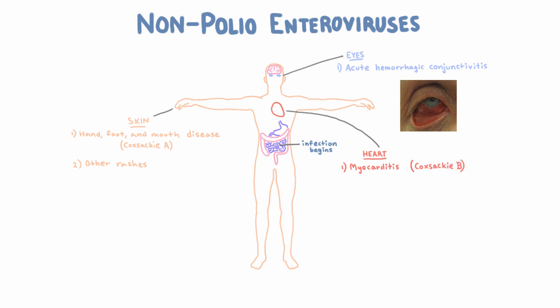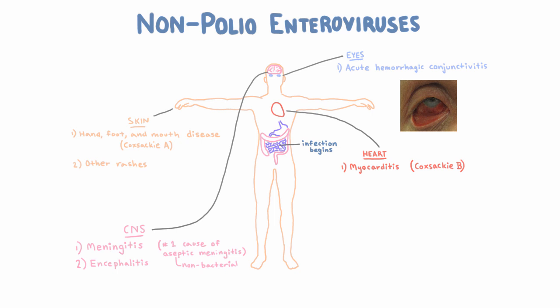Finally, enteroviruses can also go to the central nervous system, where they can cause several diseases. Most importantly, they can go to the meninges and cause meningitis. In fact, enteroviruses are the most common cause of aseptic meningitis, meaning non-bacterial meningitis. More rarely, these viruses can infect the brain itself and cause encephalitis. And remember that polio is an enterovirus that causes paralysis by infecting the anterior horn cells of the spinal cord. Other enteroviruses like to do that too, causing what we call acute flaccid paralysis. Enterovirus D68 is often implicated in this. Unlike polio, these people usually recover — that's why it's called acute flaccid paralysis; it doesn't cause permanent paralysis.